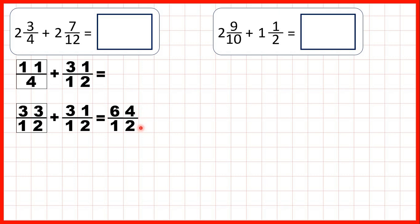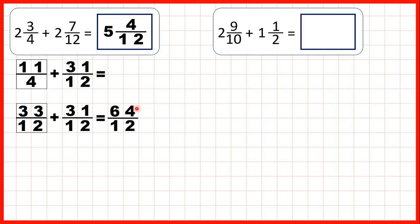But we can turn that back into a mixed number by dividing. 64 divided by 12 is 5, remainder 4, and the denominator stays the same, so our answer is 5 and 4 twelfths. We can check that because 5 times 12 is 60, plus 4 is 64.